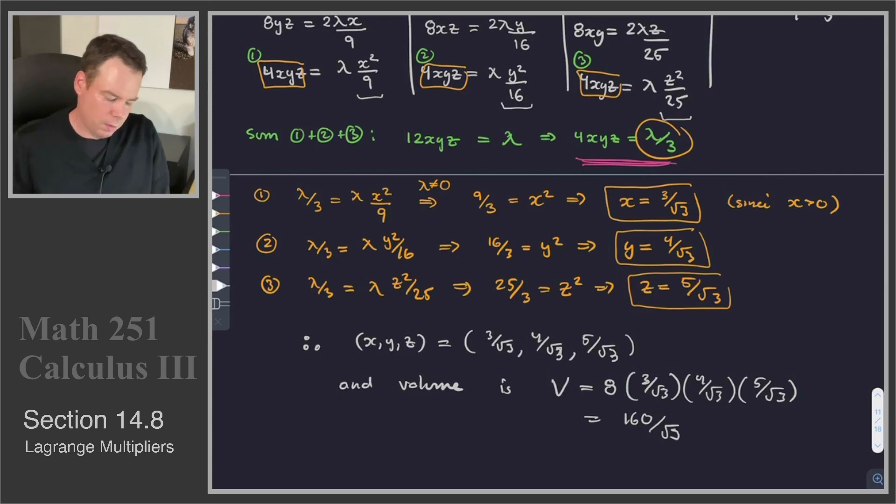And so that becomes 160/√3. So there we found the box that has maximum volume, and the corresponding volume is 160/√3. I'll kind of clean up that 3 in the bottom, because it didn't look like one.